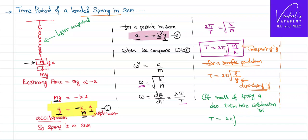it can be derived that time period equal to 2 pi into root of mass suspended plus mass of the spring by 3, all divided by spring constant of course. This is how we can handle a loaded spring and its time period. That's it.